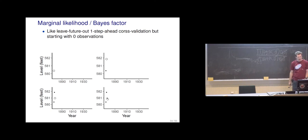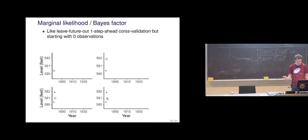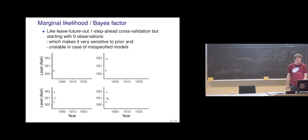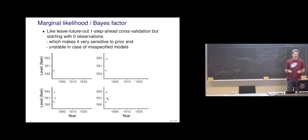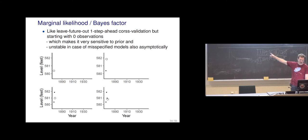There are some special cases — just those models where there's maybe just one parameter — where it can be useful to compute this Bayes factor. But most of the time I don't work with that kind of model, and I assume you don't either. In addition to being very sensitive to prior, the Bayes factor is also unstable in case of misspecified models, and also unstable asymptotically — so in case of misspecified models, even if you would get more and more data, it can still be behaving badly.